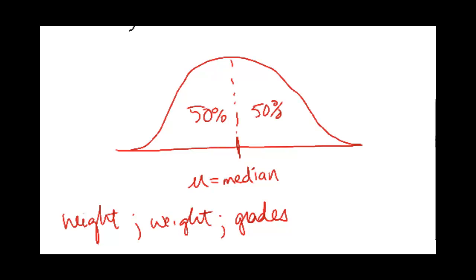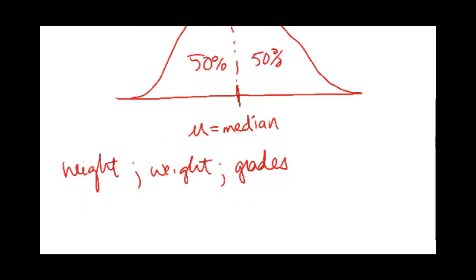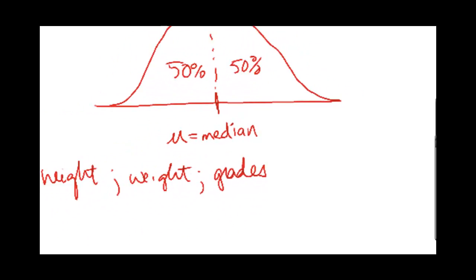It's 2:15 in the morning and I'm having trouble forming sentences. Now, the problem with normal distributions is that height is measured from 0 to 6 or 7 feet, weight from 0 to 1,000 pounds, grades from 0 to 100. All these things have such different scales and units that there needs to be a way to standardize it.